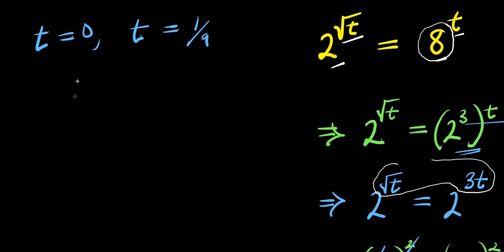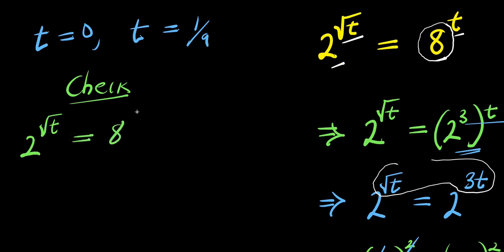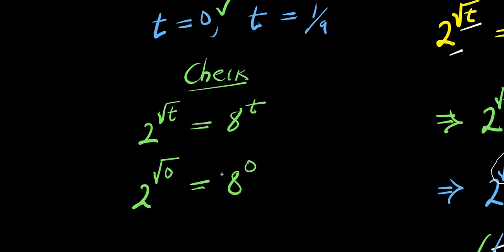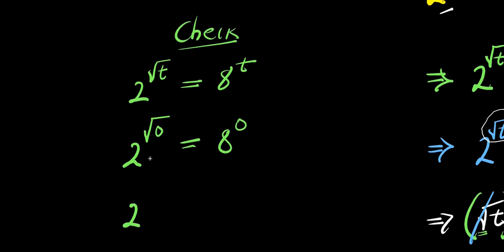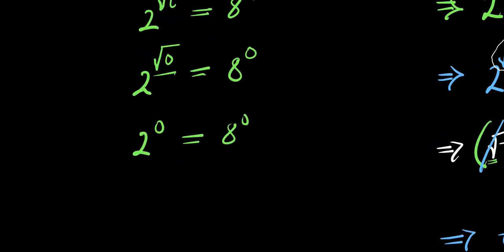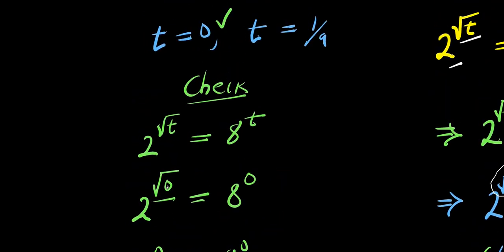Let's start with t equals 0. Check: 2 to the power of square root of 0 equals 8 to the power of 0. Square root of 0 is 0, so we have 2 to the power of 0 equals 8 to the power of 0. Any number raised to a power of 0 equals 1, so this is 1 equals 1. Left hand side equals right hand side, so 0 is also a valid solution.